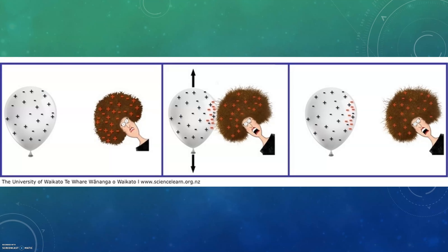Here's a graphic just to demonstrate. The pluses represent protons and the minuses represent electrons. As we take this balloon and rub it against this lady's hair, the negative charges — the electrons that were in her hair — escape from her hair and go to the balloon. The balloon is left with these additional electrons, so her hair is left with a net positive charge and the balloon has a net negative charge.